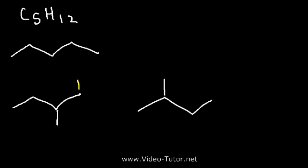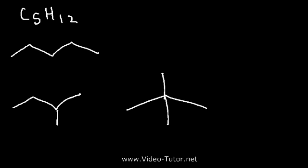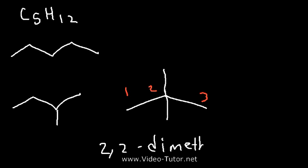We can also go down to three carbons and add two methyl groups on the middle carbon. If we name it, because there are two methyl groups on carbon 2 it's called 2,2-dimethylpropane. If it has a different name then it's a constitutional isomer. So there are three constitutional isomers for pentane.